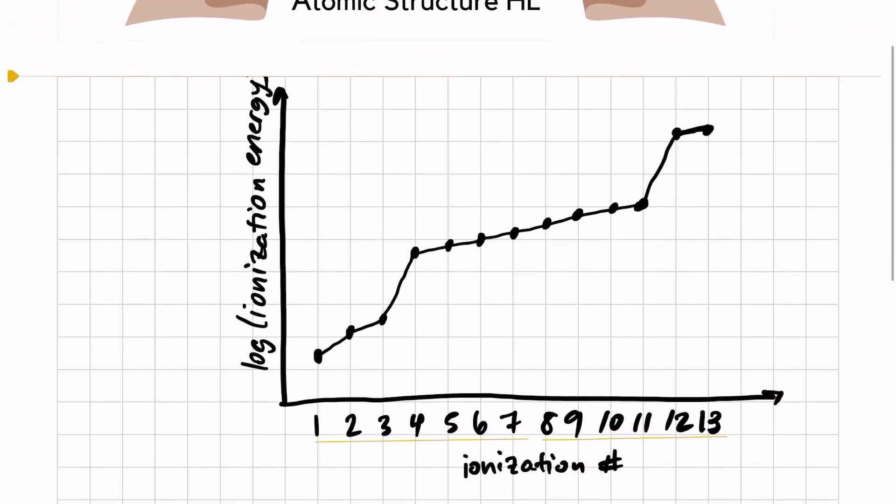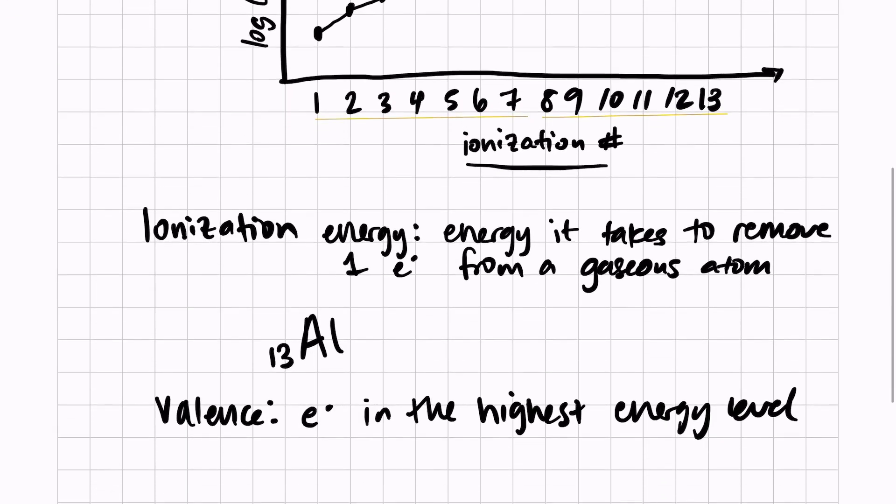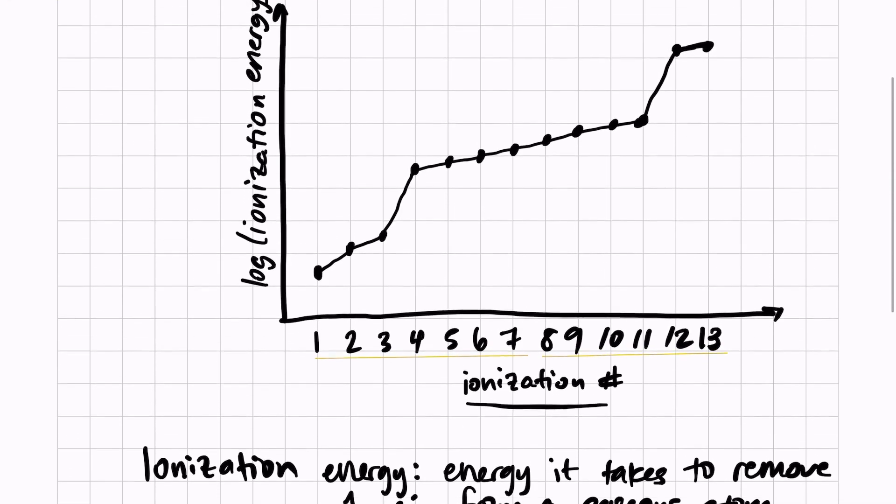Let's take a look at this graph that we have. We have ionization number, or the number of electrons that have been removed, against the ionization energy, or the energy that it required to make that happen. Aluminum, if we remember, has three valence electrons: 1s² 2s² 2p⁶ 3s² 3p¹. We can use this data as evidence that these energy levels exist.